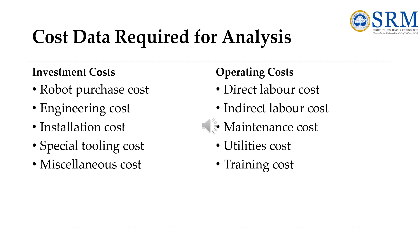Next is maintenance cost, which covers the anticipated cost of maintenance and repair for the robot cell. This involves not only indirect labor but also materials — replacement parts and service calls by the robot manufacturer. Next is utilities, which includes the cost of utilities to operate the robot cell, for example electricity, air pressure, or gas. These are usually minor costs compared to the others.